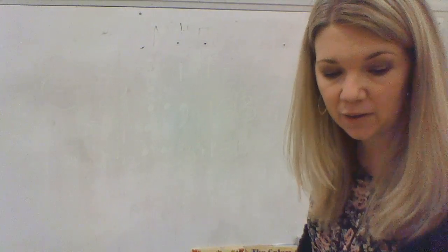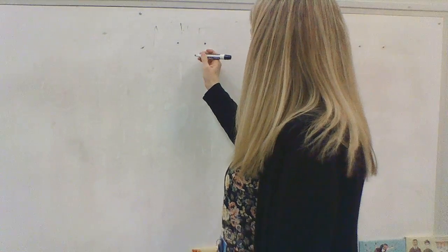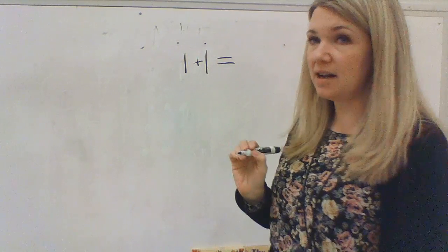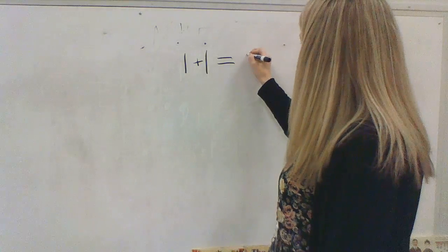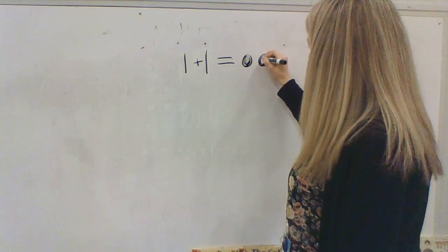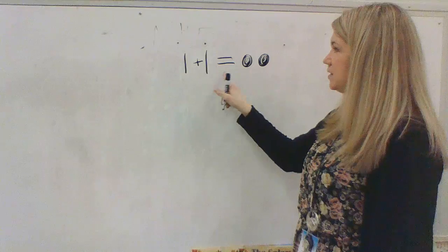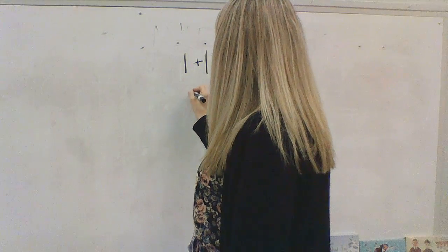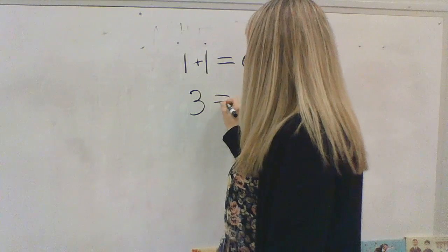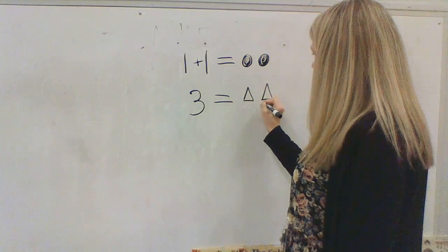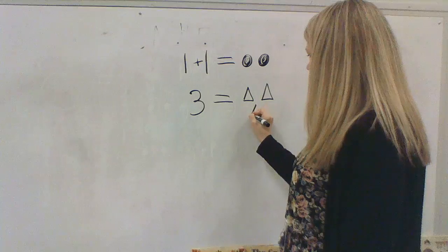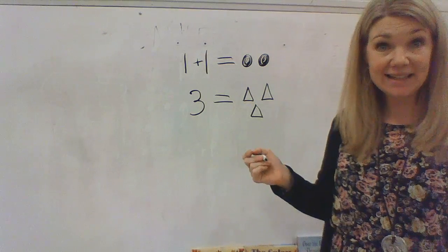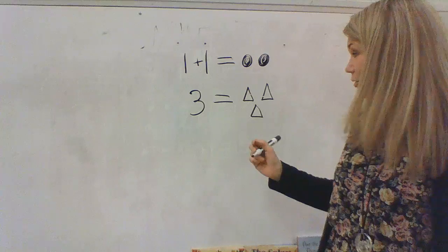Okay, one more thing with our equal sign. What if I have one plus one, and instead of writing the number two, I draw two circles? Does one plus one equal two? It does. Yeah. What if I just write the number three and I draw three triangles? Does three equal three? Yes. Three triangles and the number three — that is the same.